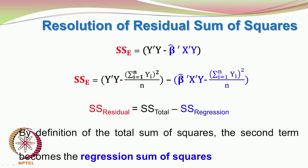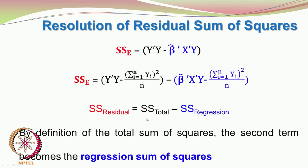β̂ is the vector of estimated regression parameters including the intercept β̂0, X' is the transpose of the X matrix, and y is the vector of observations. So we have SSE = SST − SSR, with SSE given by y'y − β̂'X'y and SSR given by β̂'X'y − (Σyi)²/n.